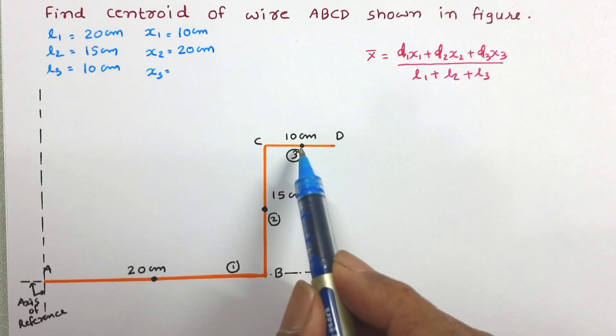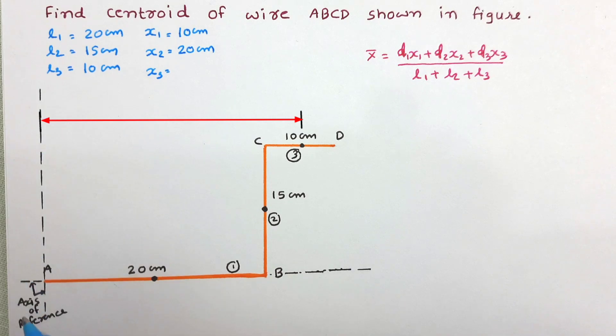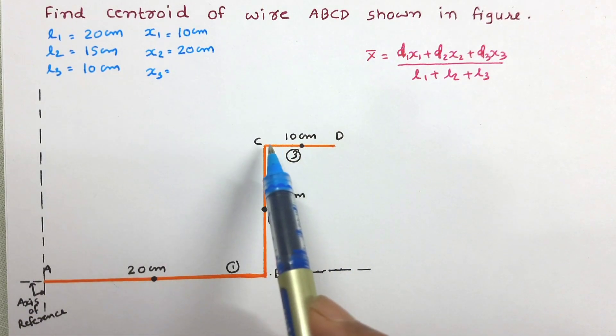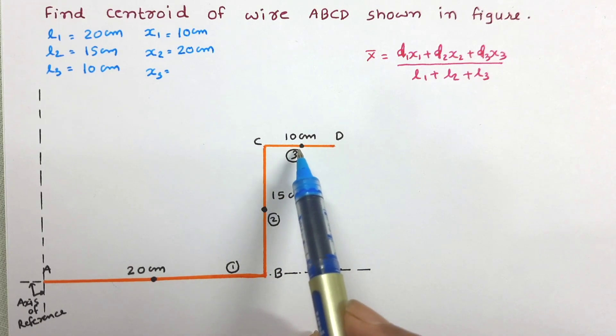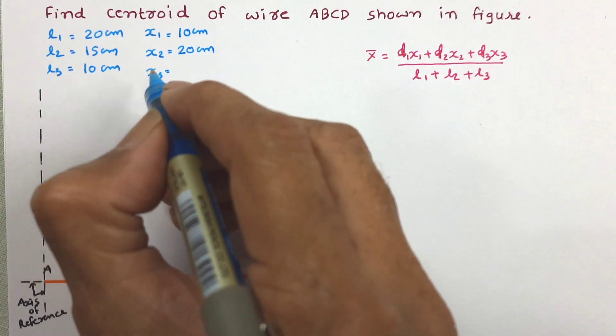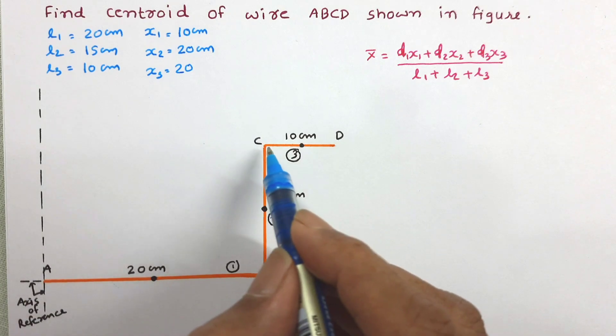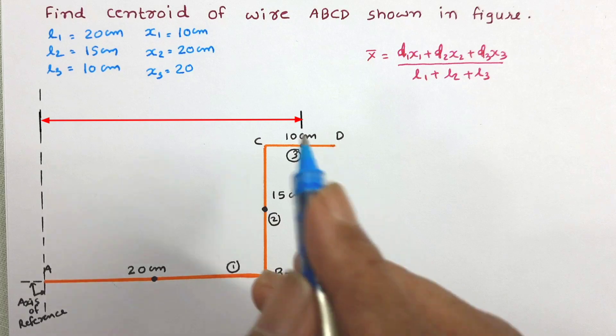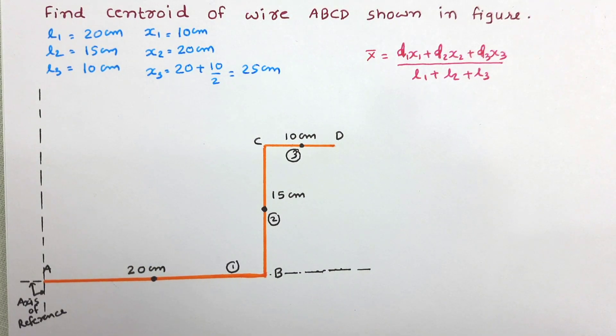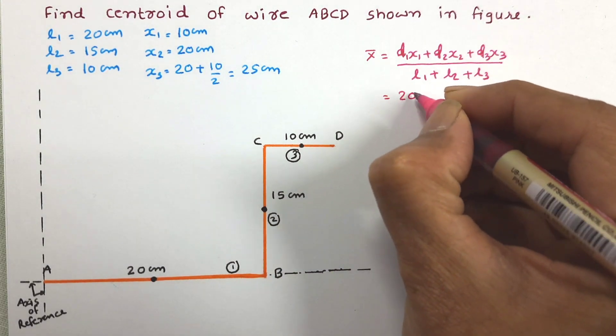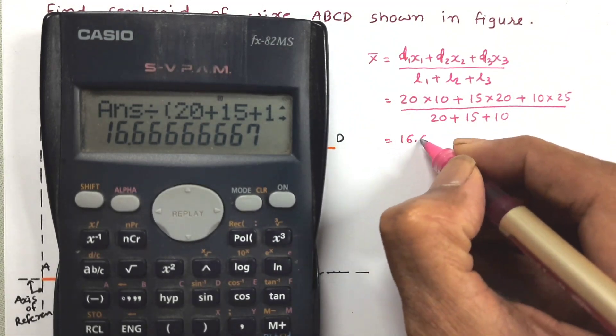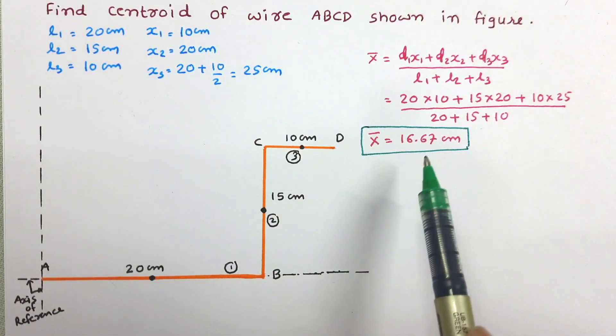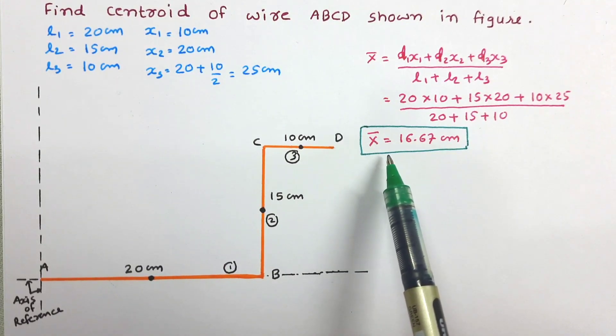This is the centroid of third figure and the distance of this centroid from y reference axis, means distance along x axis, is 20 cm plus half of CD because this is center point. So we can write 20 plus 10 by 2, which equals 25 cm. So now we have worked out value of x₁, x₂, x₃ and l₁, l₂, l₃. Let us put every value in the equation to determine x̄. After calculation, value of x̄ has been obtained as 16.67 cm.